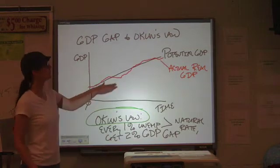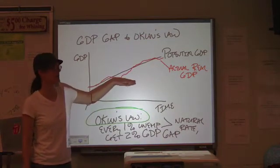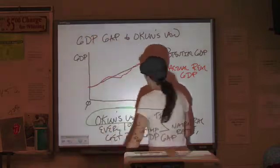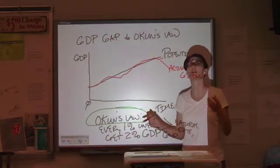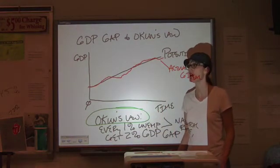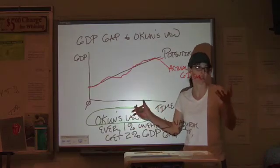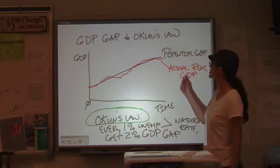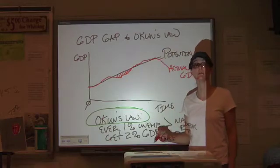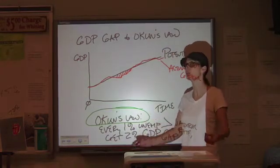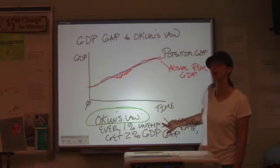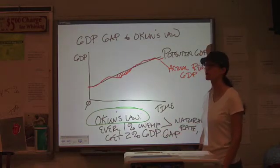Now let's look at the difference between potential GDP and actual GDP. This ties into Okun's Law. Potential GDP is what the economy would produce at its natural rate of unemployment — in the U.S., let's say that's about 5%, a convenient benchmark number. If actual GDP is under potential, that means we have some resources that are unemployed in the country.